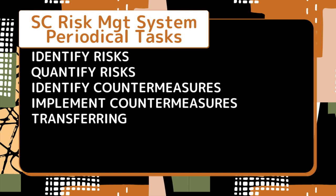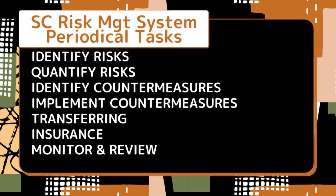Transferring: this means shifting partial or complete risks to other supply chain partners — for example, not keeping any inventory. Insurance: it is good to insure our business as much as possible. The cost is not high, but it adds a lot of protection. Monitor and review: check the effectiveness of our efforts by comparing results to our expectations. If these are not in our favor continuously, then it is better to revisit the whole process.